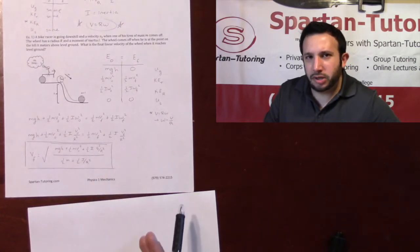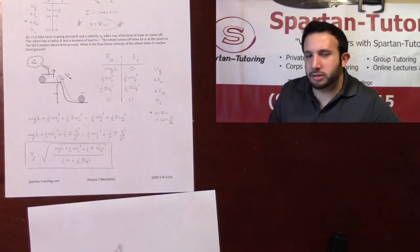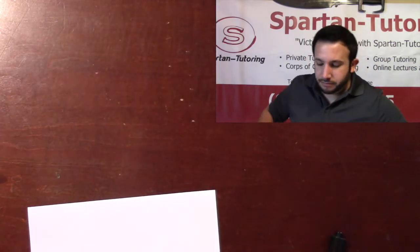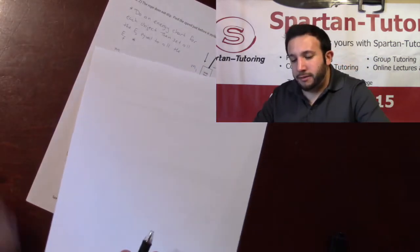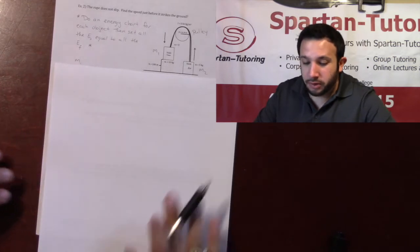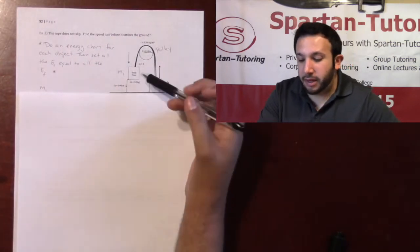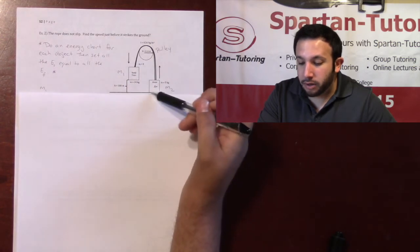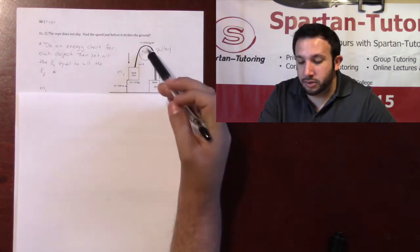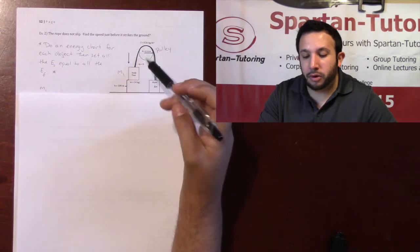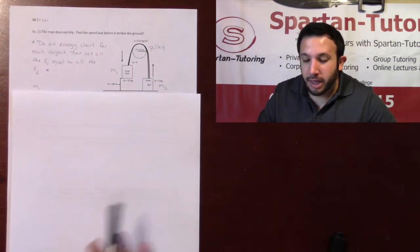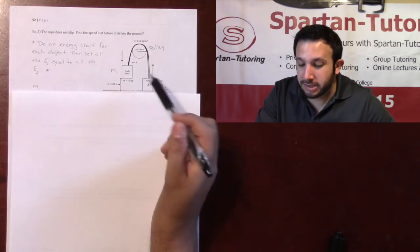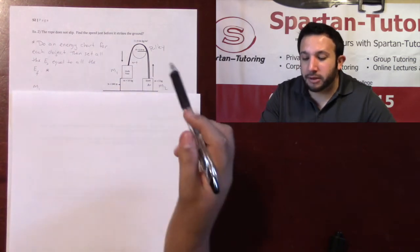Let's take a look at one more example though. There's one more type of situation that you're going to see that I need y'all to know how to do. And so for this last example, we have multiple objects. What I've got is I've got a block here. We'll call that M1. We've got a block here. We'll call this M2. And I've got a pulley that rotates.